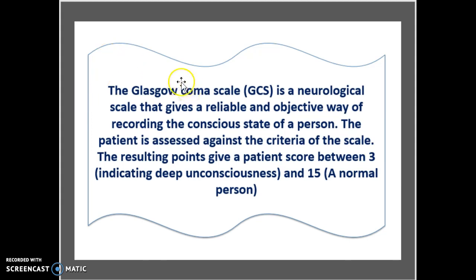So what is the Glasgow Coma Scale? Basically, it's a neurological scale that gives a reliable and relatively objective way of recording the conscious state of a person. The patient is first assessed against the criteria of the scale and the resulting points give a score between 3 and 15 — 3 being a person in a very deep unconscious state, and 15 being a completely normal responding individual.